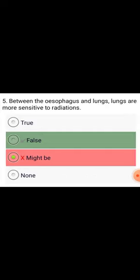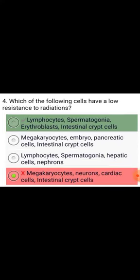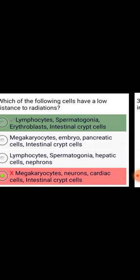Between the esophagus and lungs, lungs are more sensitive to radiation — false. Which of the following cells have low resistance to radiation? Lymphocytes, spermatogonia, erythroblasts, and intestinal crypt cells.